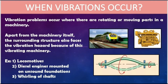Vibration problems occur where there are rotating or moving parts in machinery. Apart from the machinery itself, the surrounding structure also faces vibration hazard. Examples include locomotives, diesel engines mounted on unsound foundations, and whirling of shafts.